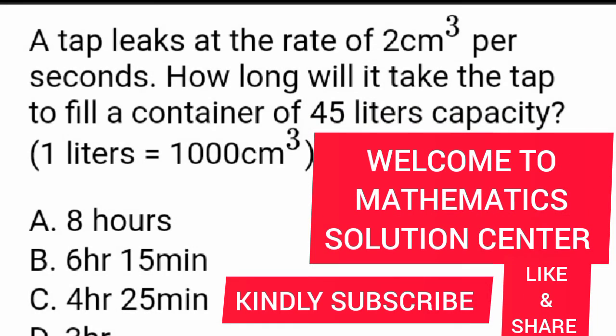A tap leaks at a rate of 2 cm³ per second. How long will it take the tap to fill a container of 45 liters capacity? 1 liter is equal to 1000 cm³.